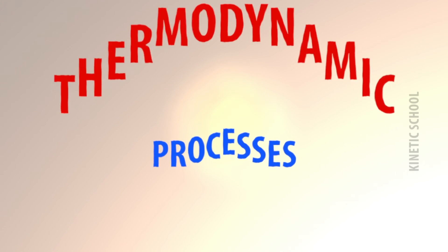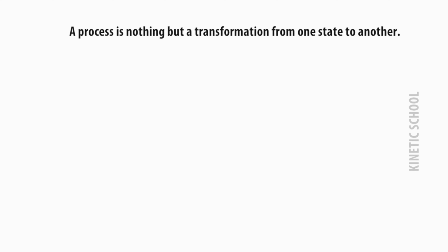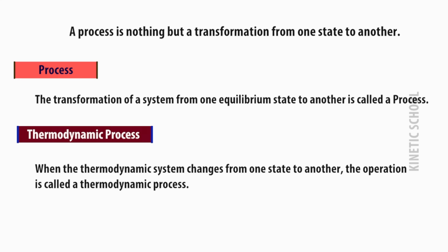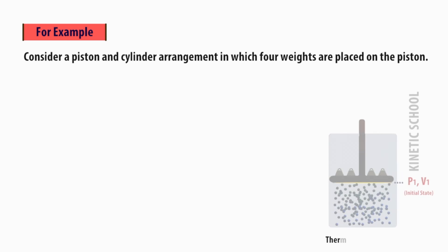First, we need to know what a process is. A process is nothing but a transformation from one state to another. In thermodynamics, the transformation of a system from one equilibrium state to another is called a process. When the thermodynamic system changes from one state to another, the operation is called a thermodynamic process. This process involves the change of conditions such as temperature, pressure, and volume.